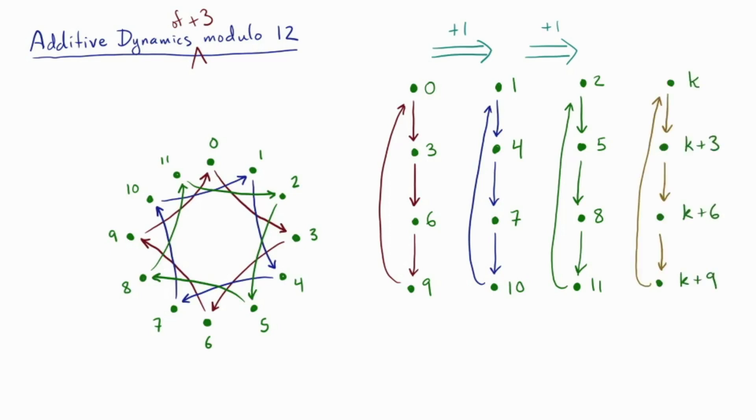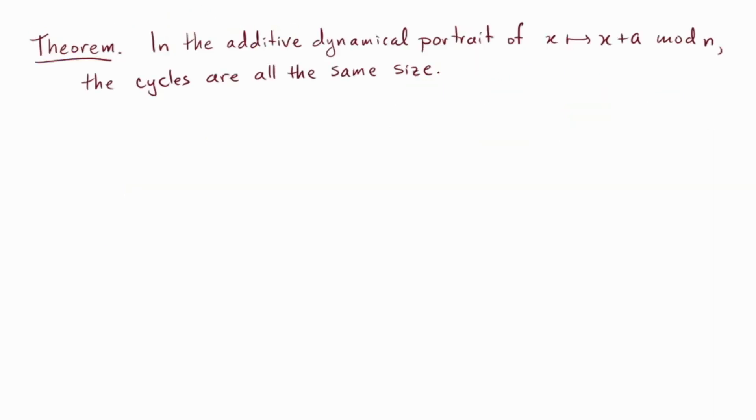Okay, so in fact all the cycles have the same structure. So they look like k goes to k plus 3 goes to k plus 6, then to k plus 9, and back to k. So once you've figured out k, you've got the whole cycle. Changing k gives you one of the other cycles. So all the cycles really look the same in some sense, and we can expect them to be the same size. Okay, so let's see if we can turn this into a proof.